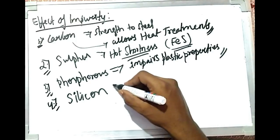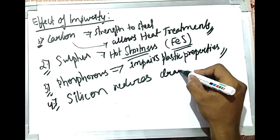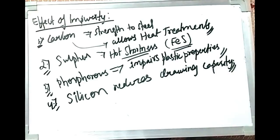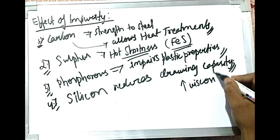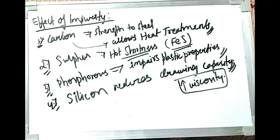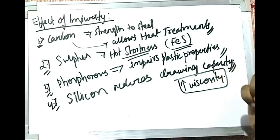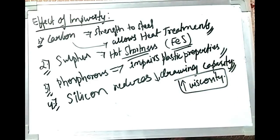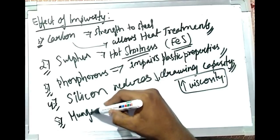Silicon is generally present in the form of SiO2. It reduces the drawability of steel. SiO2 is an acidic oxide which increases the viscosity of the slag. Since wires are drawn from steel — one of the major applications — this drawing capability is decreased because of the increased viscosity caused by silicon.